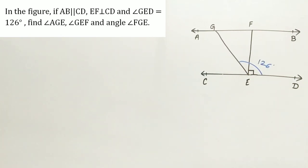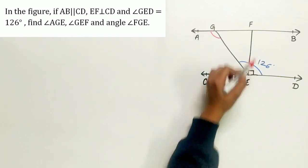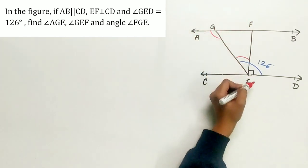EF is perpendicular to CD, and angle GED is 126 degrees. Find angle AGE, angle GEF, and angle FGE.